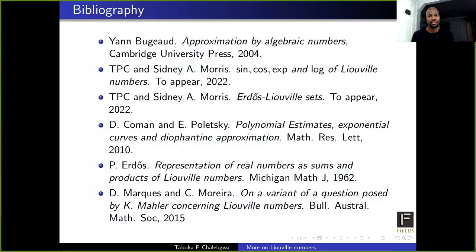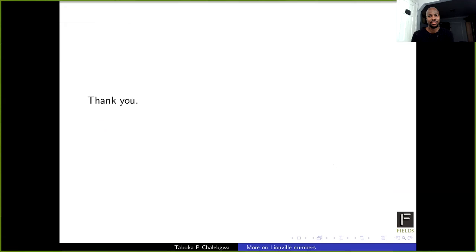For bibliography on Mahler sets, I recommend a book by Jan Bujo on approximation by algebraic numbers. We also mentioned a paper by Koman and Poletsky, and a paper by Diego Mack and Carlo Moreira on ultra-Liouville numbers. That's all I had for you. Thank you.